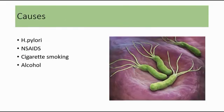The causes of peptic ulcer disease include Helicobacter pylori infection, which is a type of bacteria. H. pylori causes a local inflammatory reaction and secretes enzymes that break down the gastric mucosal barrier. It also enhances gastric acid secretion and decreases bicarbonate production.